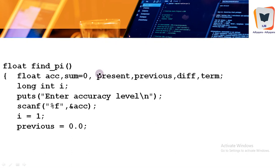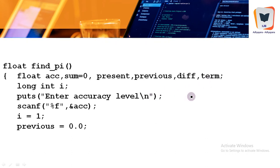In the definition of find_pi, the local variables include accuracy_level entered by the user, sum initialized to zero, present and previous values of the pi series, and difference (present minus previous). We iterate until difference is less than or equal to the given accuracy. The loop variable i is declared as long int because we don't know how many terms are needed to reach the requested accuracy — computing i*i could overflow an ordinary two-byte integer.